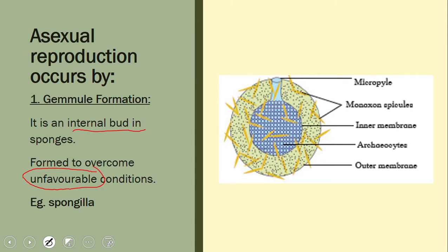During gemmule formation, a mass of cells called archaeocytes or amoebocytes cluster together and secrete a thick resistant covering around themselves. When favorable conditions return — proper temperature, water, and environment — they emerge through a micropyle or opening as new individuals. This is most commonly seen in Spongilla. Remember: gemmule formation occurs in unfavorable conditions.